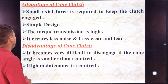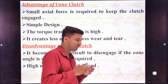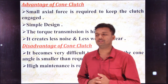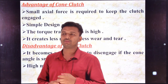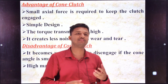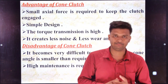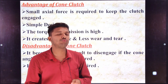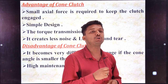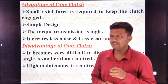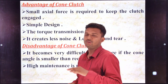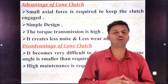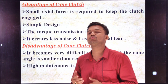Regarding the disadvantage — in the case where the cone angle is smaller than required: during the design of a cone clutch we have to be very careful to give a particular specific angle, which must be above 20 degrees or more, ideally above 25 degrees. If the cone clutch angle is too small or too large, the cone clutch will not work properly.